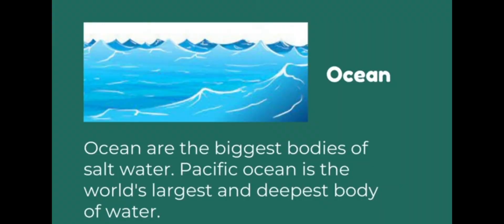The first water body is ocean. Oceans are the biggest bodies of salt water. The Pacific Ocean is the world's largest and deepest body of water. Ocean means mahasagra — it is very large, and its water is salty. We cannot drink this water.